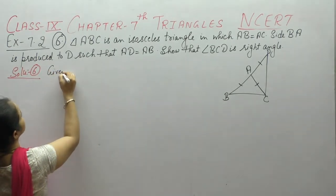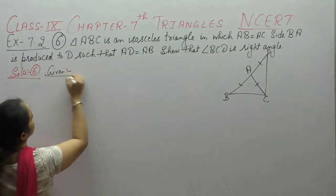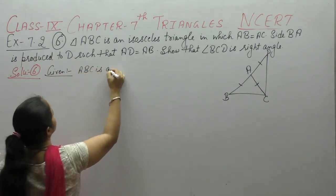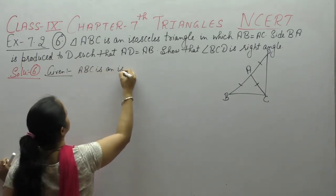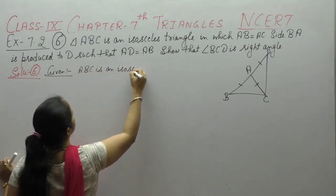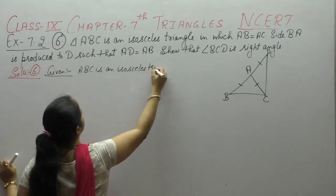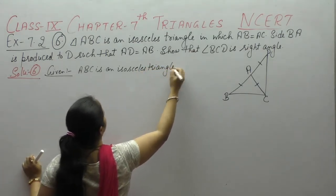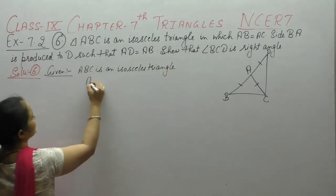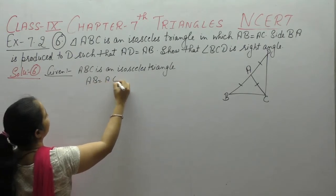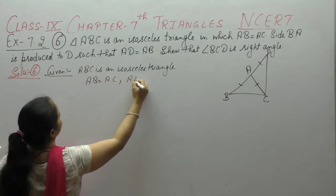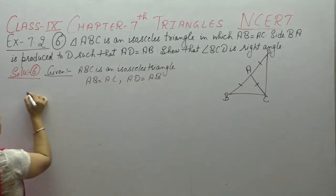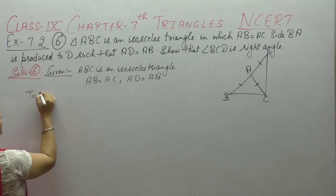Given: ABC is an isosceles triangle, AB is equal to AC, and AD is equal to AB.